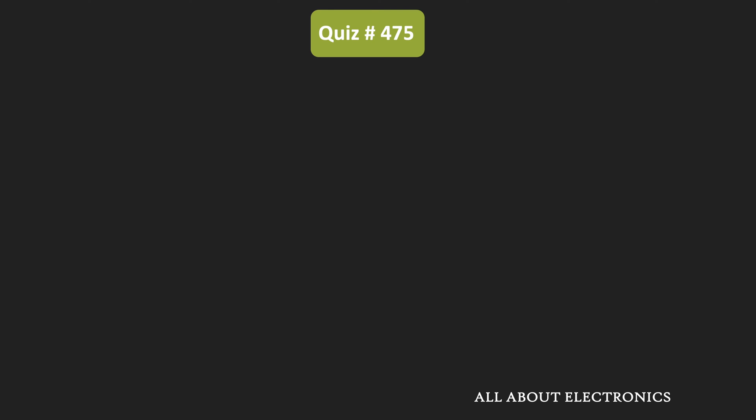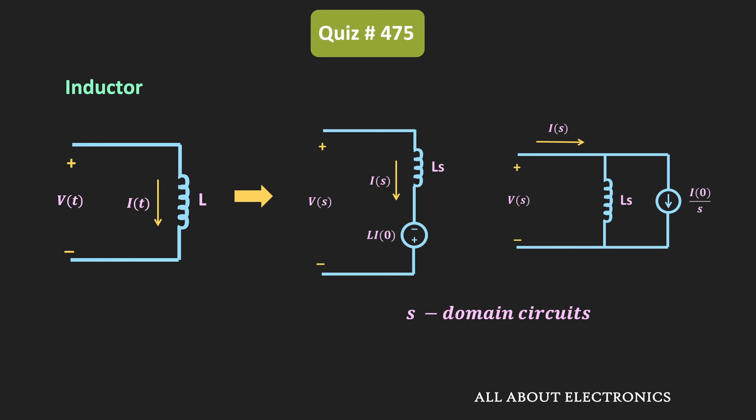So in the earlier videos, we have seen that if I0 is the initial current through the inductor, then in the equivalent s-domain, it can be represented by any one of the following representations. And here, we have been given the first representation.